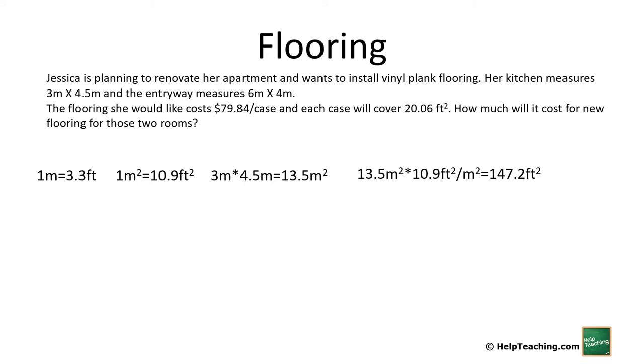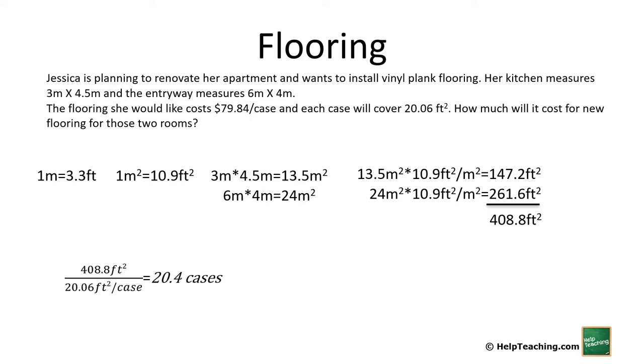6 meters times 4 meters gives us 24 square meters. 24 square meters times 10.9 square feet per square meter gives us 261.6 square feet for the entryway. We add those together and we get 408.8 square feet. So now we need to see how many cases that is. So 408.8 divided by 20.06 square feet per case gives us 20.4 cases or a minimum of 21 cases.